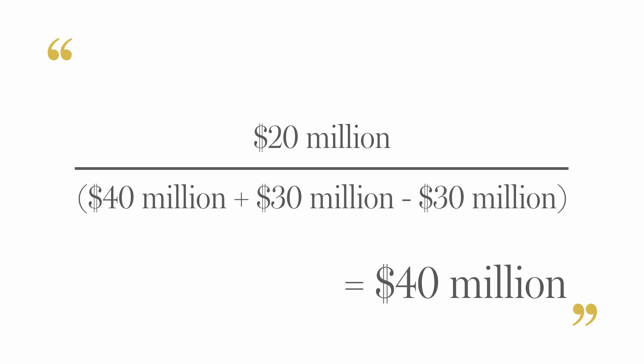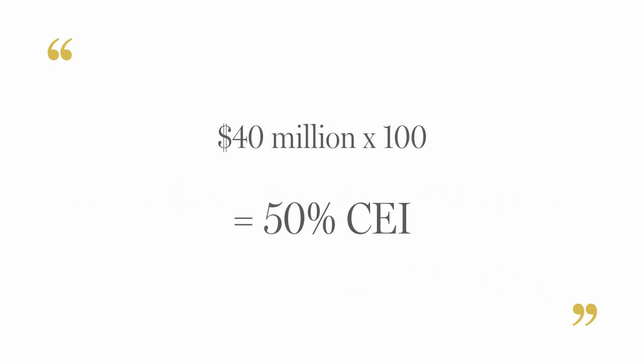Then you divide by the denominator: beginning receivables of 40 million, plus monthly credit sales of 30 million, minus the ending current receivables — rather than the total receivables — which was 30 million, giving you 40 million dollars. You then multiply those results by 100, and it gives you a 50% CEI. What that should tell you for Company A is that Company A needs to look at their billing and collection process.